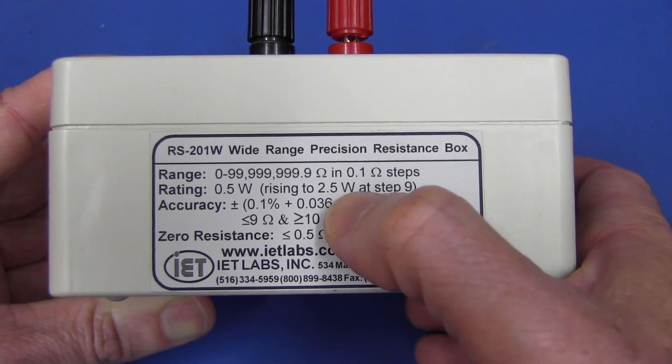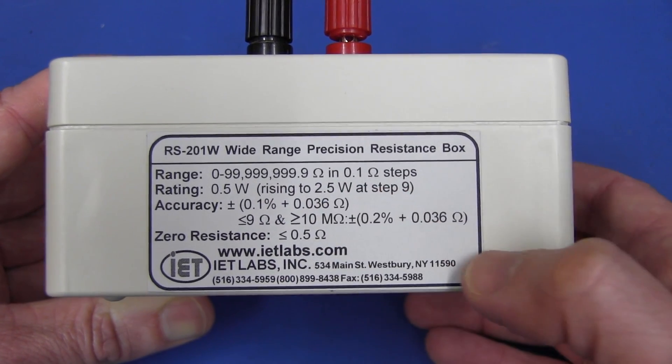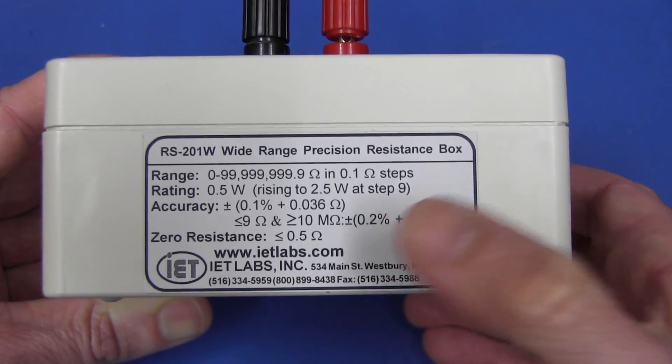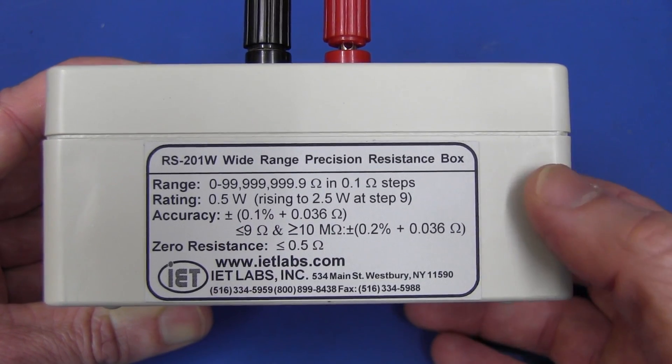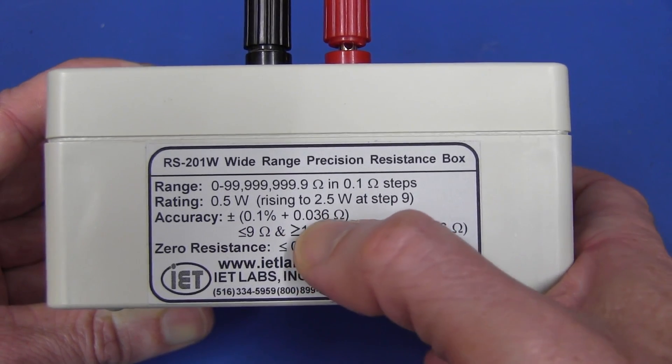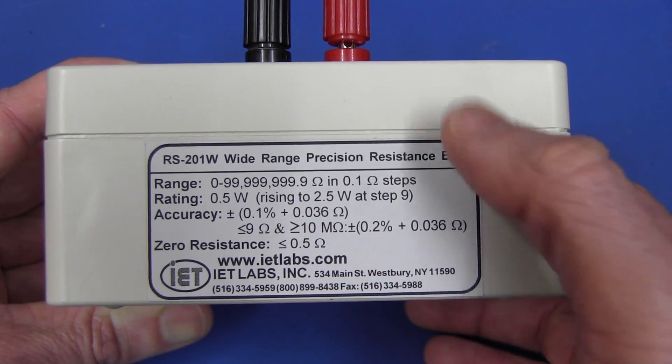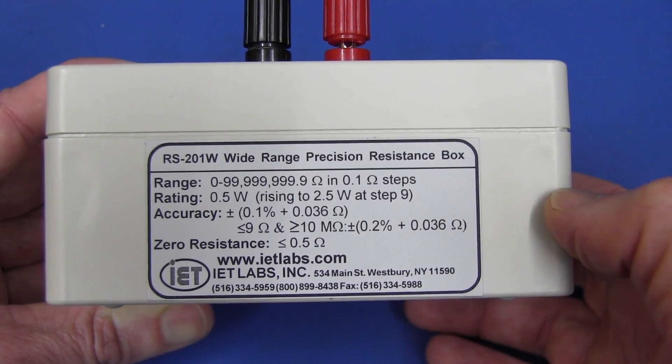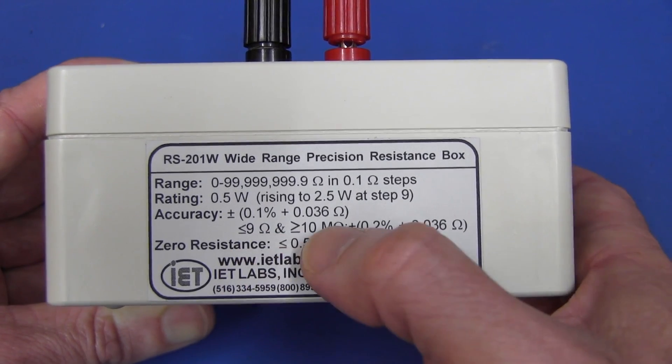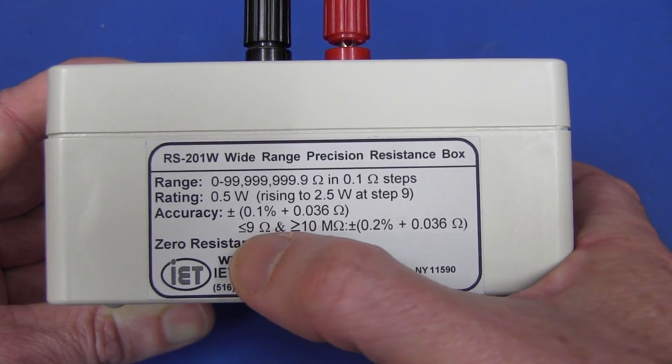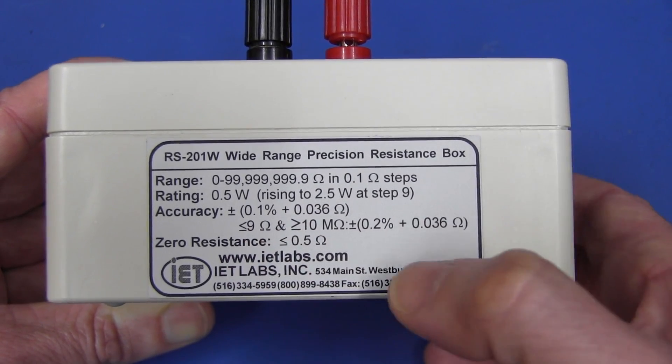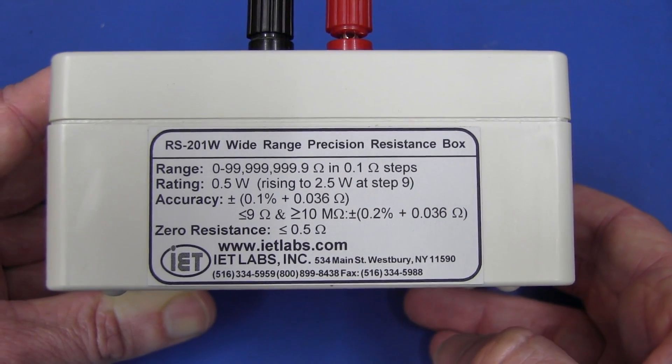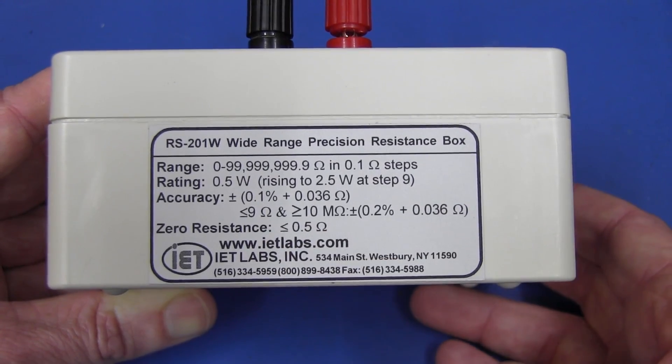But because they're in series, that will actually rise up to a maximum of 2.5 watts if you actually dial it in to a value of 9, basically. And the accuracy is plus minus 0.1% plus 0.036 ohms because it will have, when you're dialing zero, it will have that fixed offset value there. So it's nice that they've actually included that. But that accuracy only applies if you're between 9 ohms and 10 megohms. If you're outside of that, it's going to be plus minus 0.2% instead of 0.1. And the zero resistance is less than 0.5 ohms.